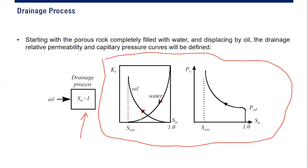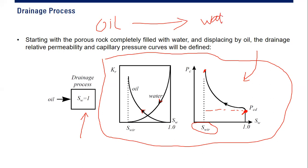The capillary pressure increases as water saturation decreases toward irreducible water saturation. The drainage process — where oil displaces water — happens during the initial accumulation of oil: oil migrates from the source rock, moves upward, and displaces the water. It can also occur during field production.